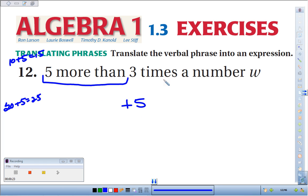Well, in this case, what are we adding 5 to? We're adding 5 to 3 times a number W. So to represent that, we could write 3 times some number W, but usually we'd write it without the dot, we'd have 3W plus 5.